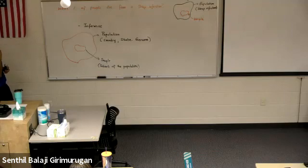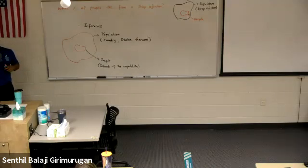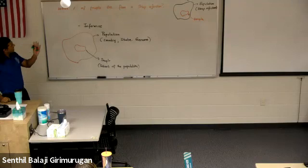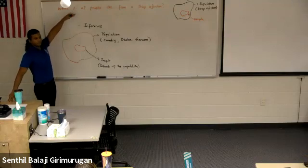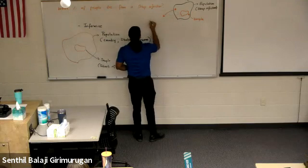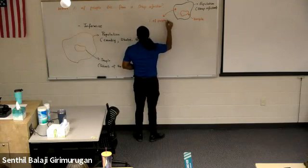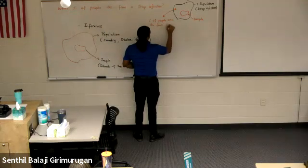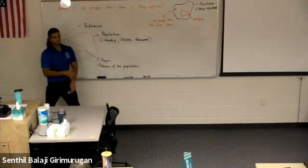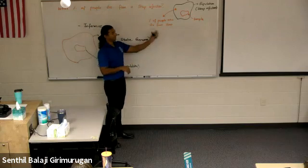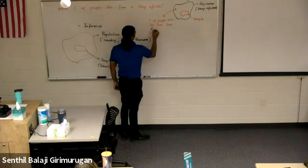What is the measurement of interest in the population? What is the number that we are interested in about the population? The number of people that die from the population. The number of people that die, specifically speaking, the percent of people that die. So, that is what I am interested in. That is the numerical quantity of interest in the population. And that is what we call the parameter.